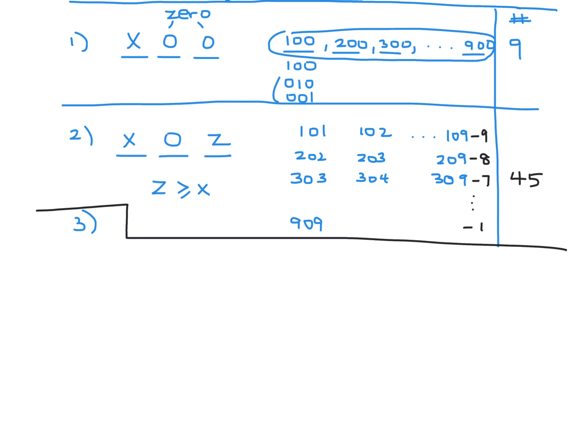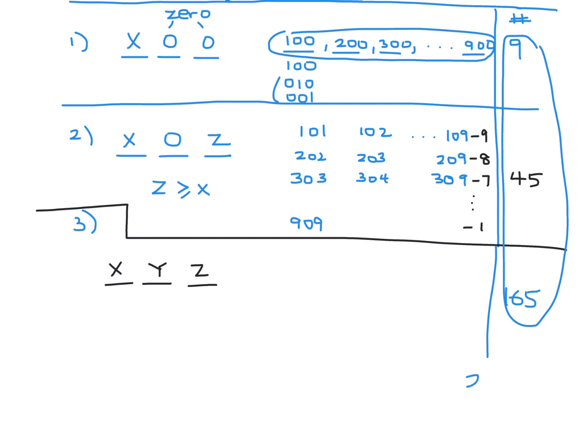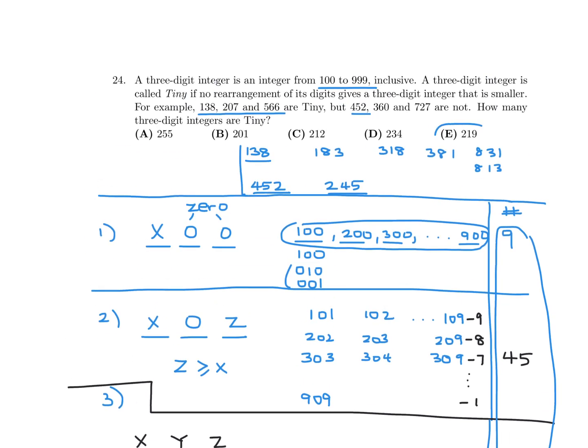Now the third and final type is of the form XYZ, where all three digits are non-zero. This is a little more complicated, and requires a table. We get 165 for this case. Adding all three types together: 9 + 45 + 165, we get 219. So 219 is the answer. That was choice E.